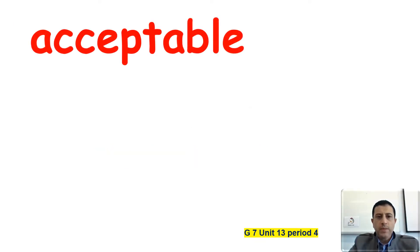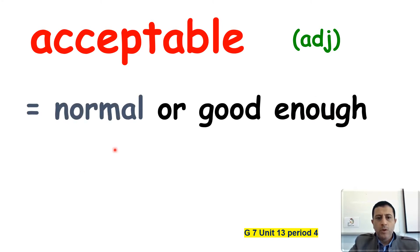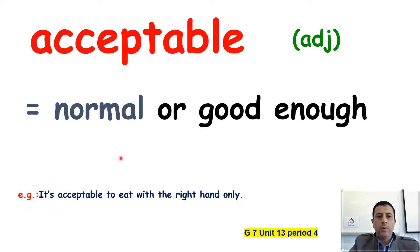The first word is 'acceptable.' Acceptable is an adjective. Acceptable means normal or good enough. An example: It is acceptable to eat with the right hand only.